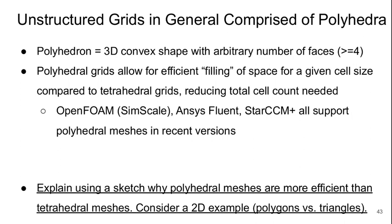In general, unstructured grids are comprised of polyhedral cells. A polyhedron is any 3D convex shape with a number of faces greater than or equal to four. A polyhedral grid allows for very efficient filling of space for a given cell size compared to tetrahedral grids, reducing the total cell count needed. OpenFOAM, which is the solver in SimScale, ANSYS Fluent, and StarCCM+ are all codes that support polyhedral meshes, some only in very recent versions. Next I'll explain using a sketch why polyhedral meshes are more efficient than tetrahedral meshes.